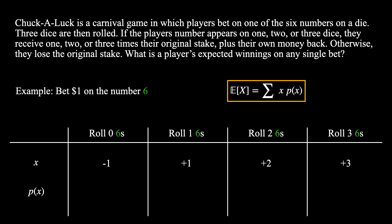Now all that's left to do is work out the probabilities. Looking at the situation where we roll zero sixes, we know that we must roll something that is not a six on all three dice. The probability of rolling not a six on any one die is five-sixths. Since all three dice are independent, the probability of rolling zero sixes is simply five-sixths multiplied by itself three times. Moving on, we compute the probability of rolling one six. For any given die, the probability of rolling a six is one-sixth. The other two dice must roll not a six, so both of their probabilities are five-sixths. However, this expression doesn't capture the entire probability — there are three possible ways this can happen, because any one of the three dice could be the one that rolls the six. Therefore, we must multiply this expression by three.